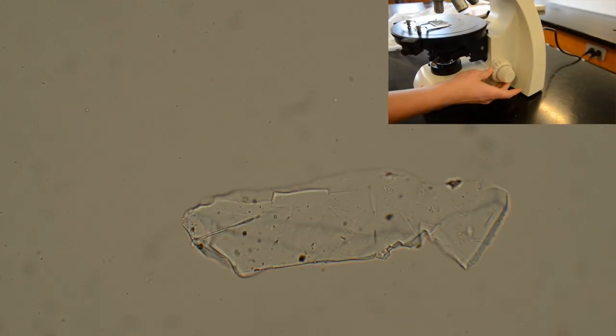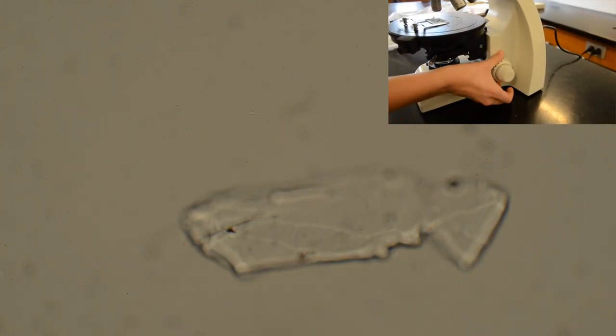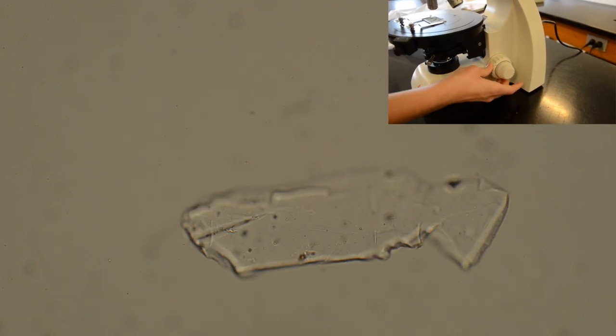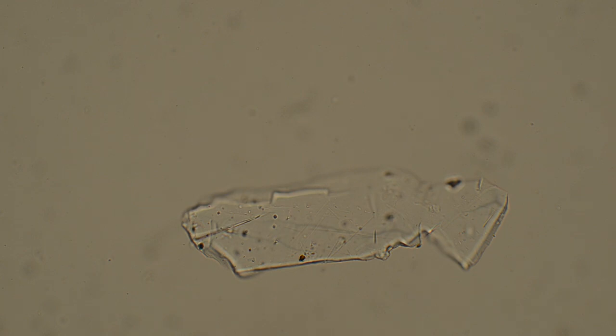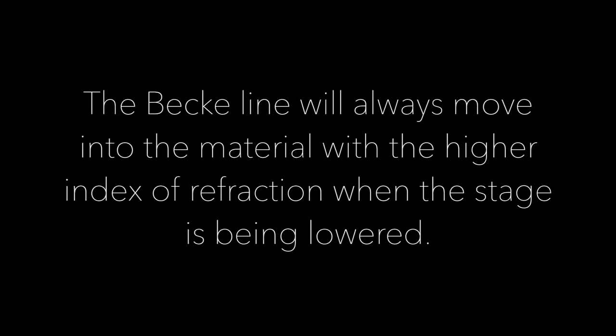Notice as we focus in and out, there is a faint white line moving in and out of the grain border. This is known as the Becke line. Becke is our best friend. The Becke line will always move into the material with a higher index of refraction when the stage is being lowered.